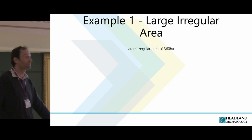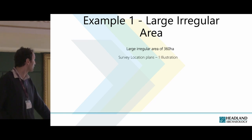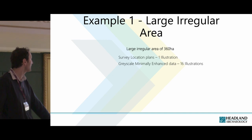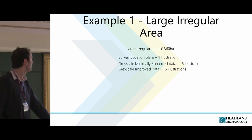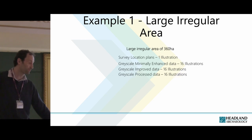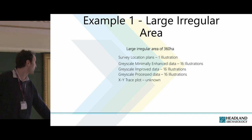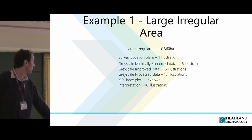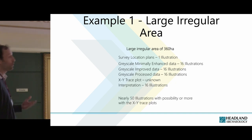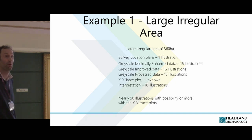I'll go through an example: a large regular area of 360 hectares — a building site. You've got your overview showing where the survey is, common for every single report. Then you show your grayscale minimally enhanced data at 1:2000 scale — that could be 16 illustrations. Then you've got your improved data on exactly the same set — 16 illustrations again. Then you've got your processed data showing practically exactly the same thing — 16 illustrations. Most people don't show the XY trace plots because it's not mandatory in the guidelines, only 'if appropriate.' Then your interpretation illustrations — potentially 16, more if you want to zoom in. That's around 50 illustrations for a survey that might only have a small area of archaeology in it, with the rest being geological and agricultural.